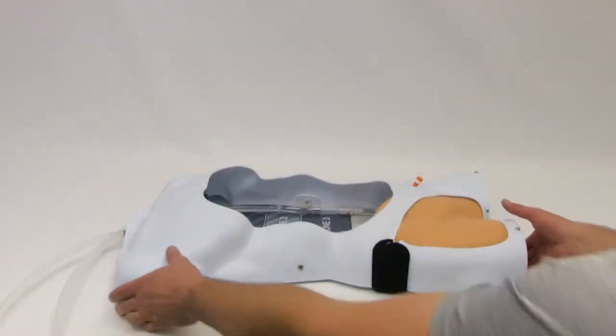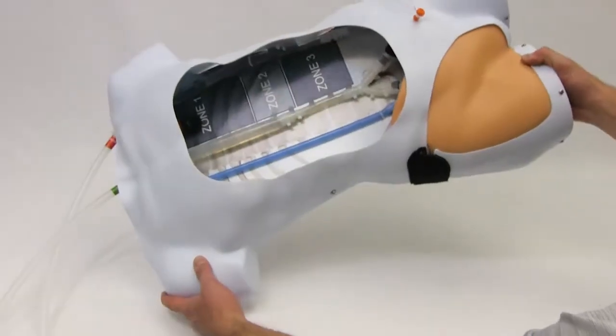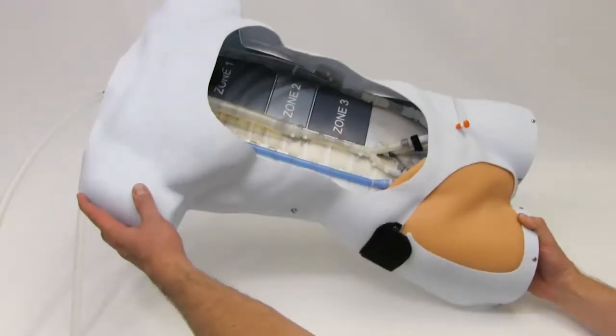Purge air from the tubing by lifting the model back and forth. This will give air within the tubing a path to escape.